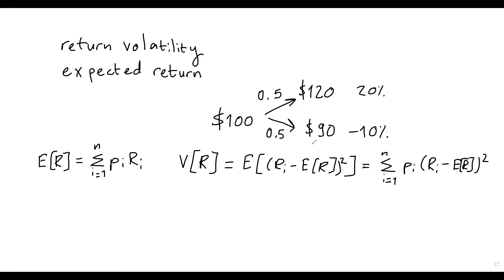So let's make these calculations for this stock. So let's begin with the easier one, the expected return. So we have 50% probability of a 20% return plus 50% probability of a minus 10% return. And this will give me an expected return of 5%.